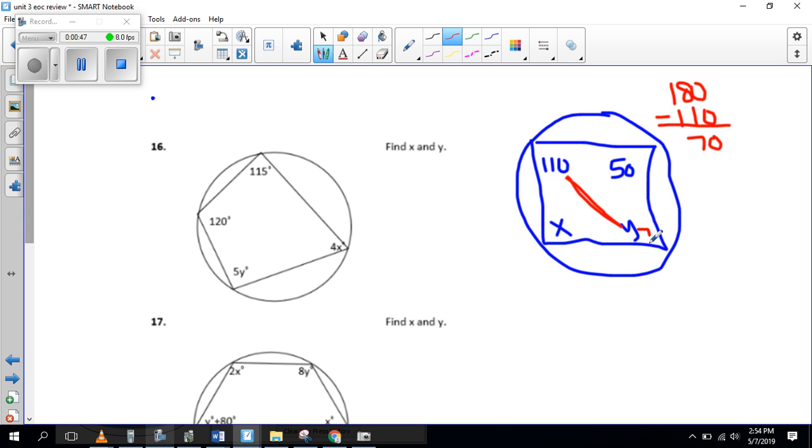So if you use your calculator, you should get 70. So if I add these back, they give me 180.